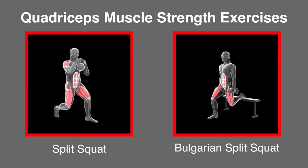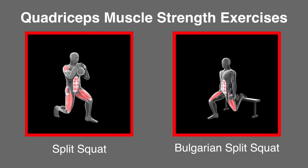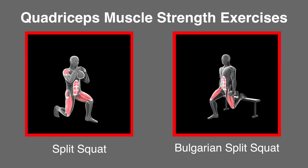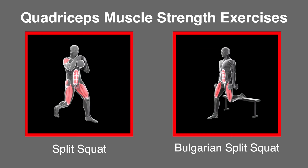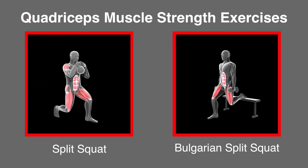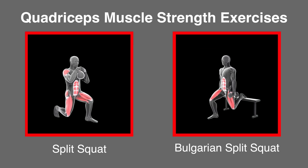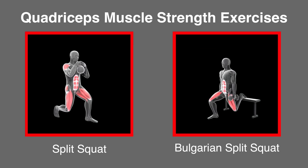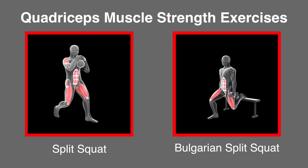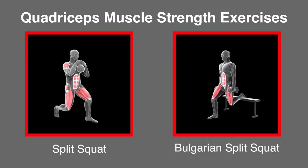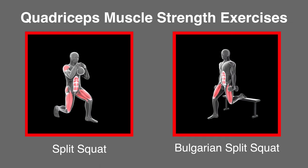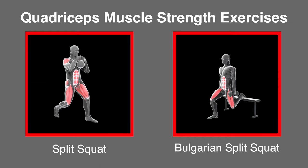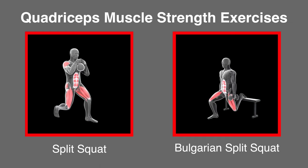An alternative — and also a progression — is the split squat, as it places more load on the front leg. This can also be performed as a Bulgarian split squat with the back foot elevated slightly to place more demand on the quads of the front leg.